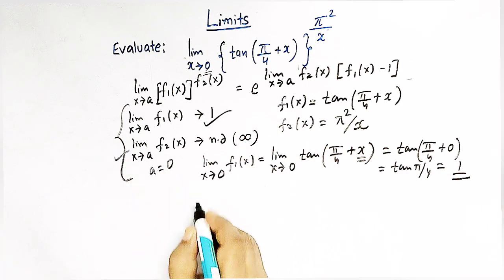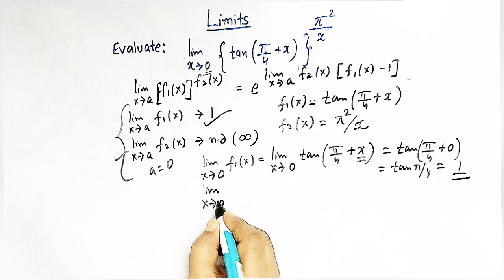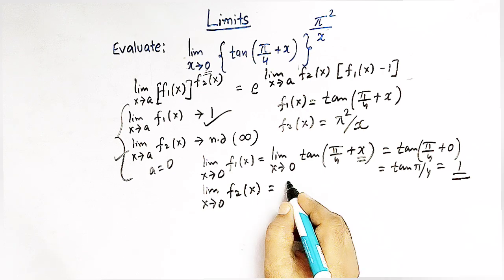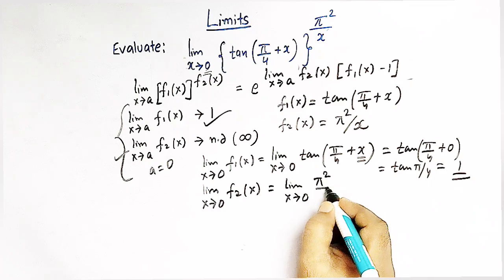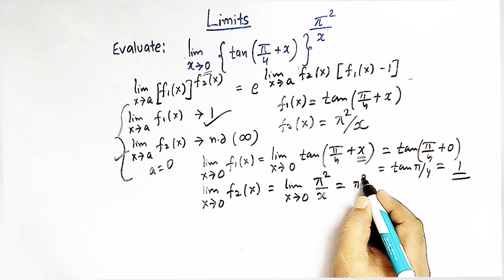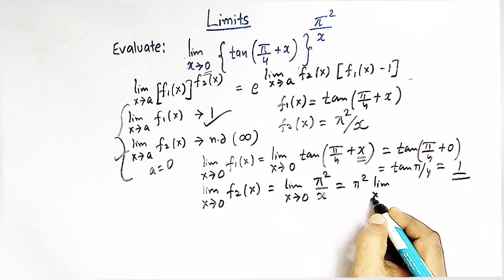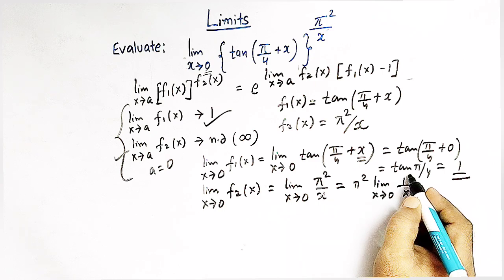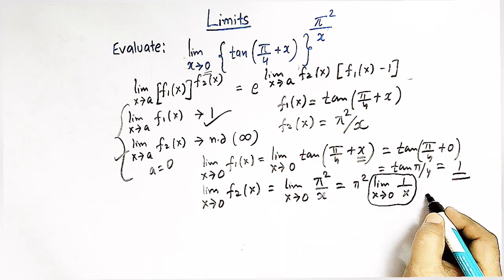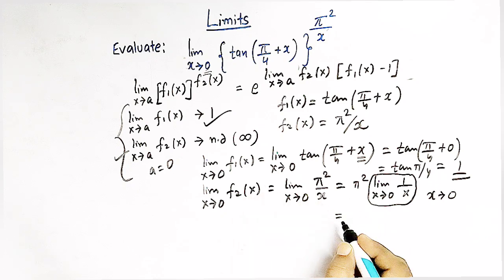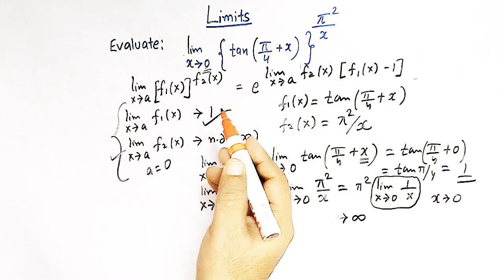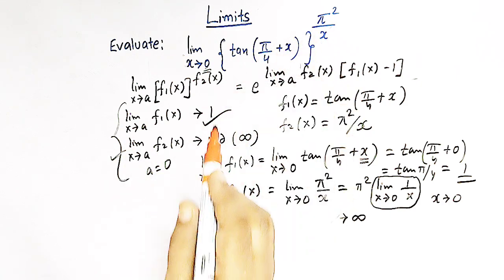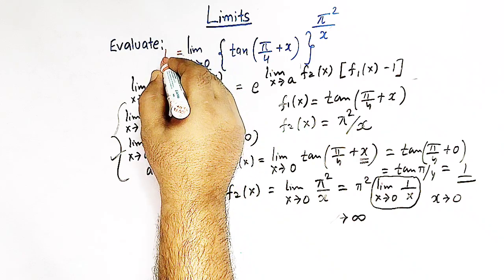Now let us check the second condition. Limit x tends to 0 of f2(x) is limit x tends to 0 of π²/x, which equals π² times limit x tends to 0 of 1/x. This limit tends to infinity when x tends to 0, so condition two is also satisfied. We call this limit L.